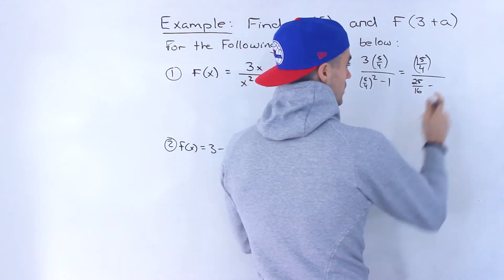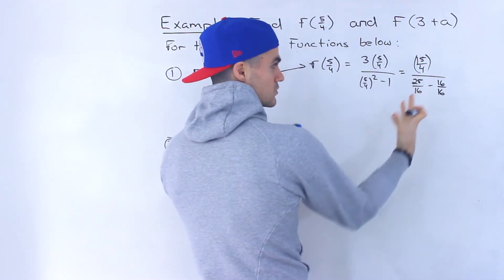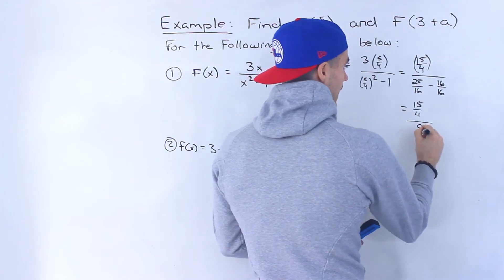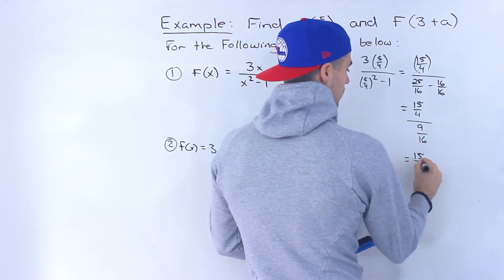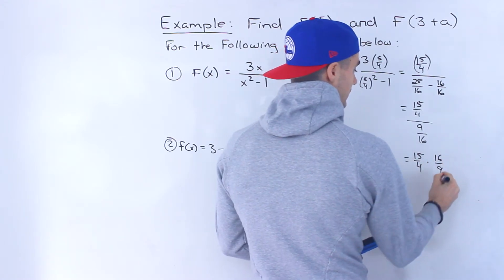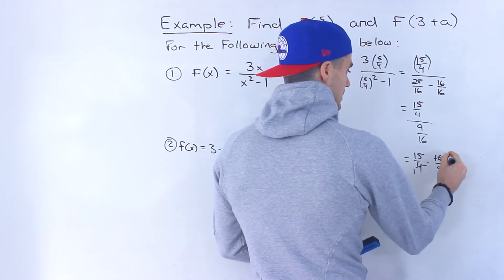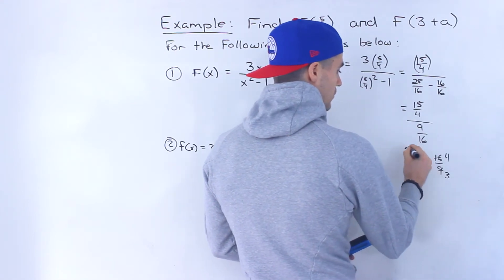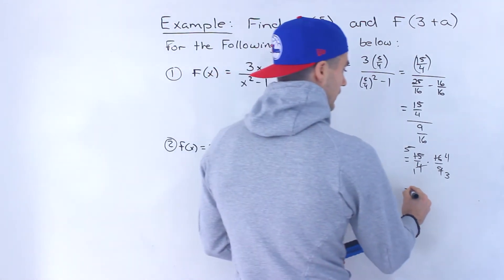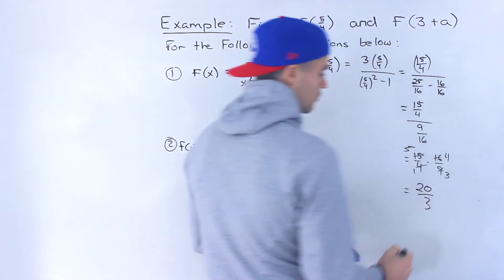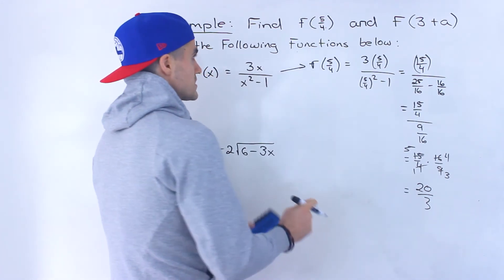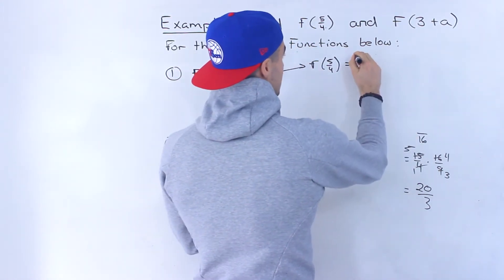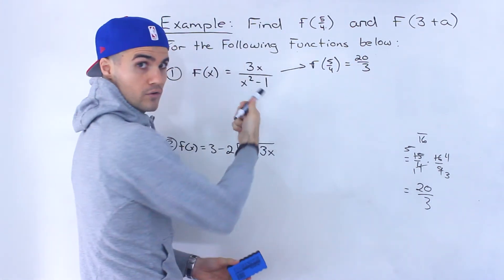We change the 1 to 16 over 16 so we can combine into one fraction. So we'd have 15 over 4 divided by 9 over 16, which is 15 over 4 times 16 over 9. Then 4 goes into 16 four times, and 15 over 9 simplifies to 5 over 3 when we divide both by 3. So the final answer for f of 5 over 4 is 20 over 3.